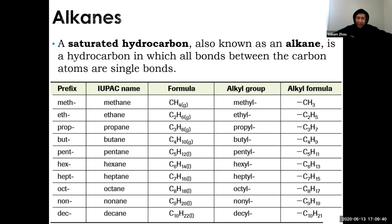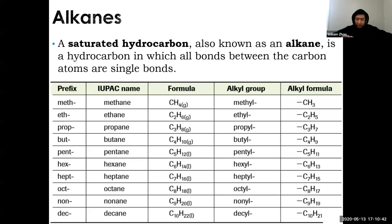The first four prefixes are special and must be memorized with their new names. From five onwards: 'pent' is five, like pentagon or pentakill; 'hex' is six, like hexagon; 'hept' is seven; 'oct' like octagon is eight; 'non' is nine; and 'dec' — like decade or decimeter — means ten. You just have to find a way to remember all 10 prefixes.